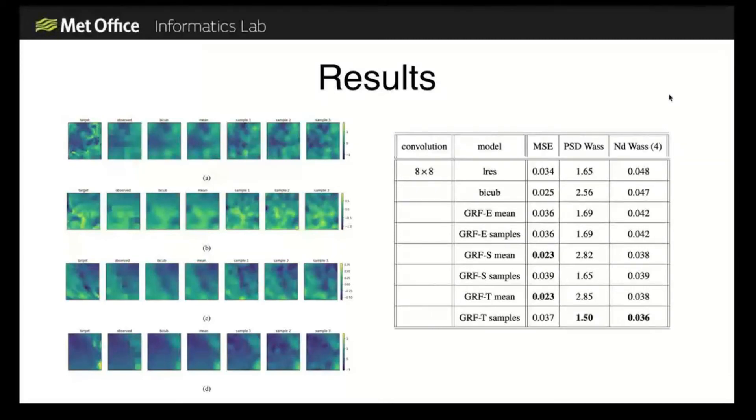The model I've described, the GRF model, has performed the best overall. The samples performing better on the two spatial verification metrics, but not so well on the mean squared error, and the mean of the distribution performing pretty well on the mean squared error.